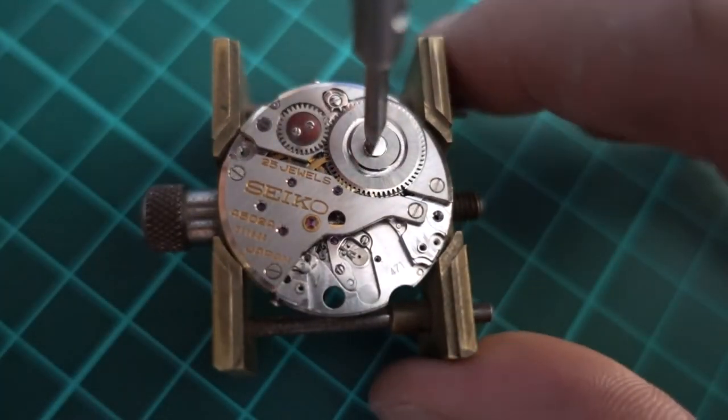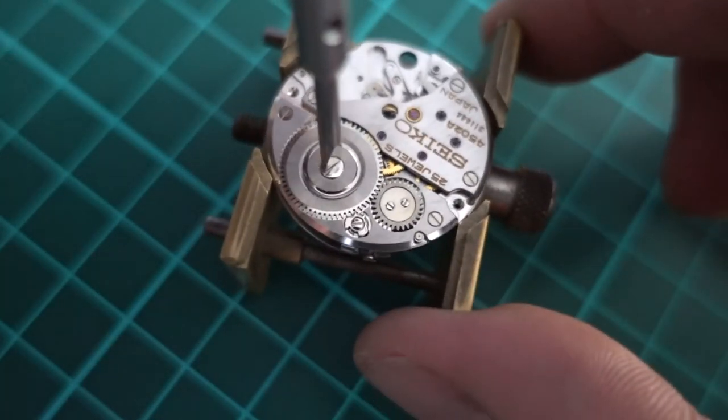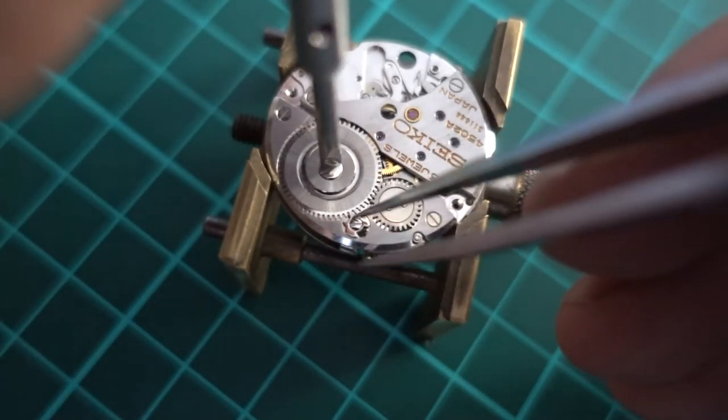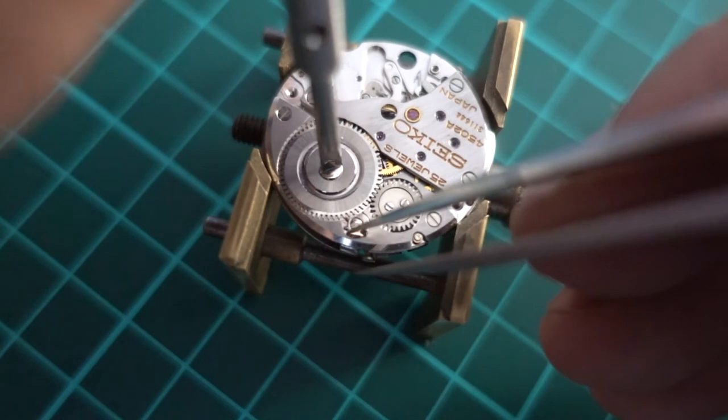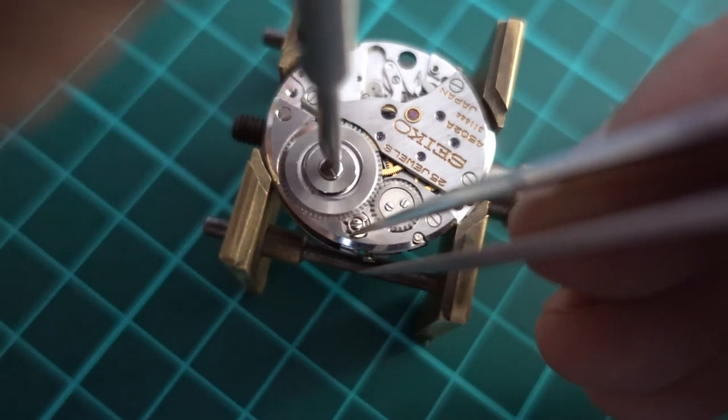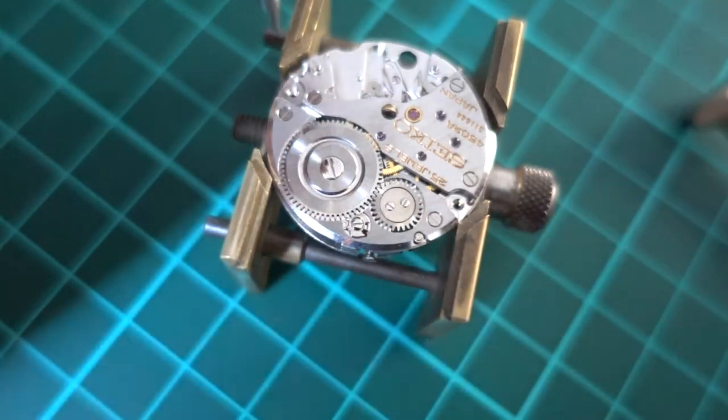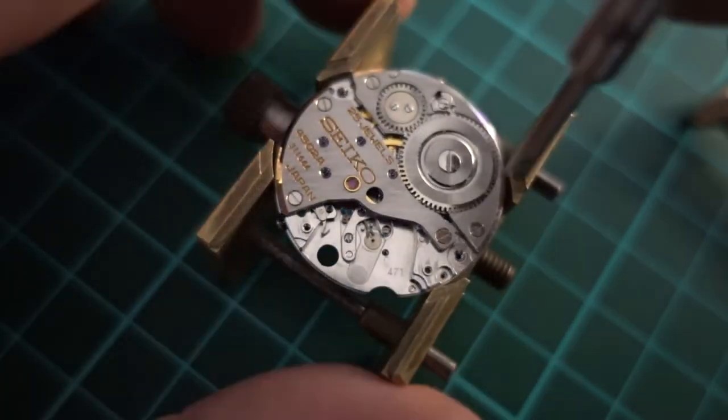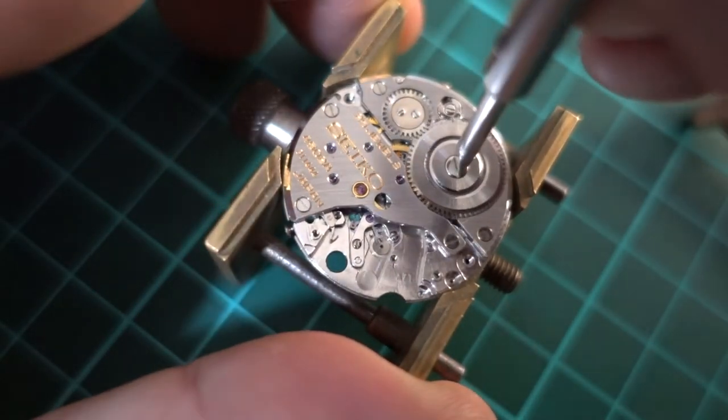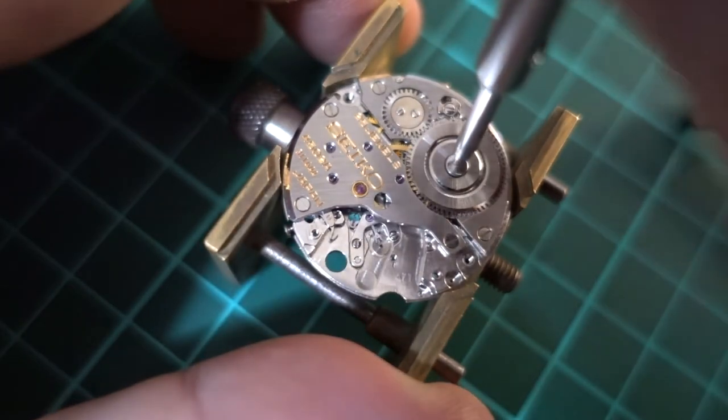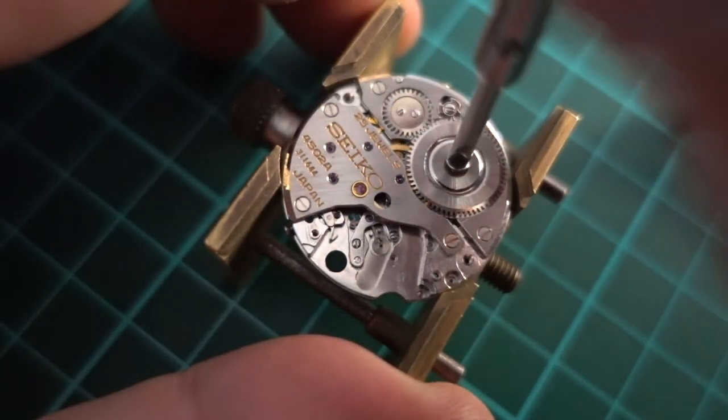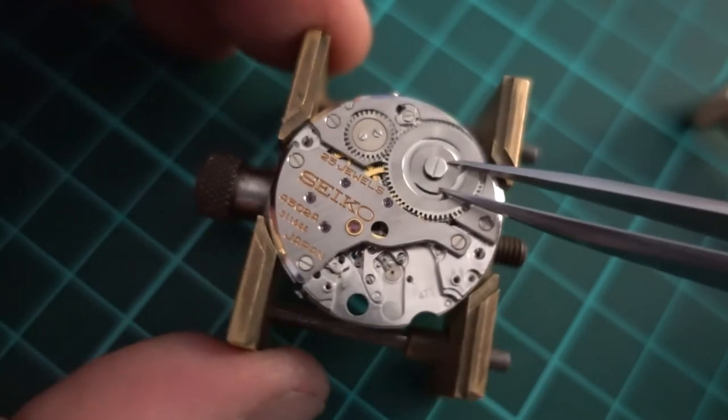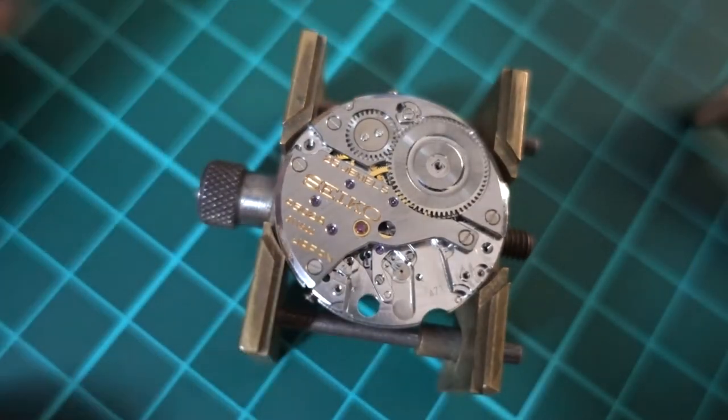Now what I'm going to do is just take the tension off the mainspring. This is pretty tricky in most cases to do. You have to be very careful when doing it because if it lets go you could easily damage one of the wheels in the movement. Now I'm just taking off that screw.